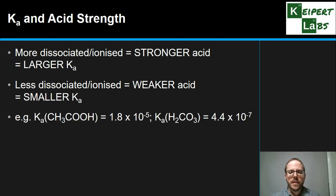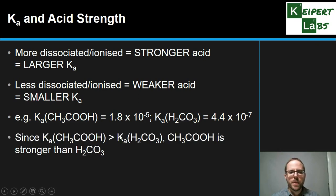So for example, acetic acid has a Ka of 1.8 × 10⁻⁵, whereas carbonic acid is 4.4 × 10⁻⁷. So because this Ka value is larger, that means it is a stronger acid than carbonic acid. Or we could flip that around and say carbonic acid is weaker than acetic acid, and we can quantify exactly how much weaker if we really wanted to.